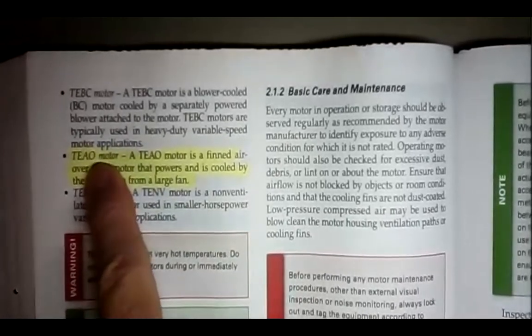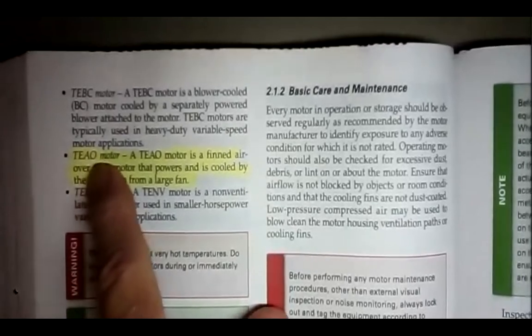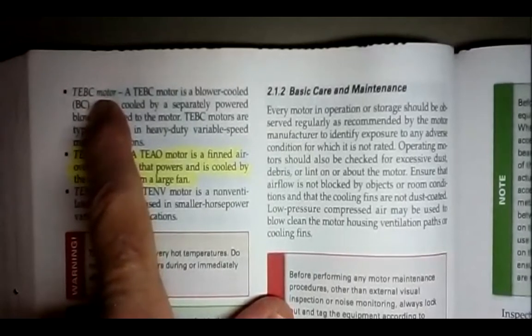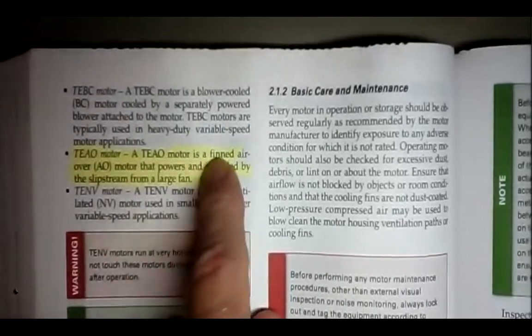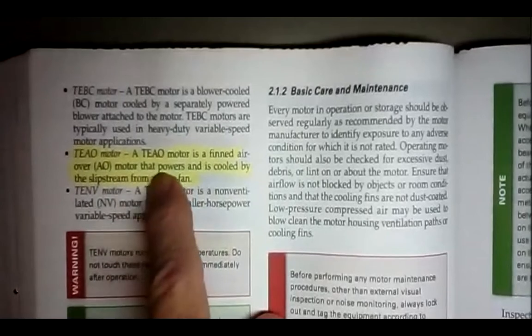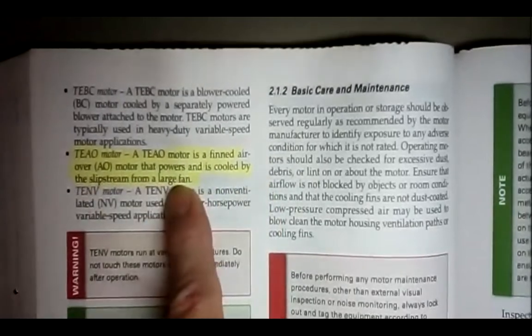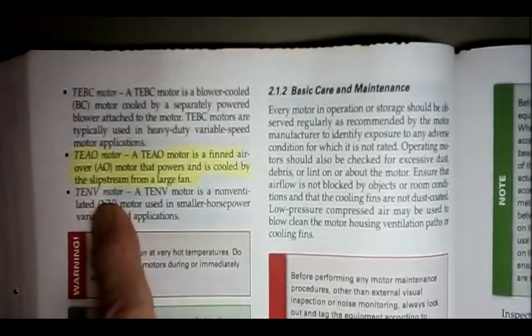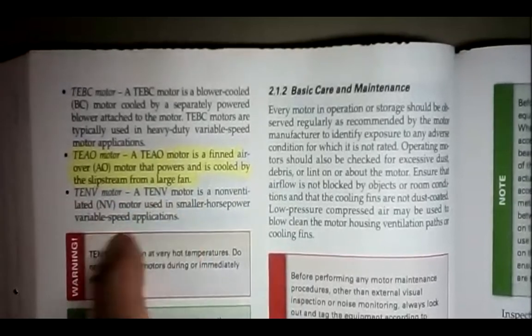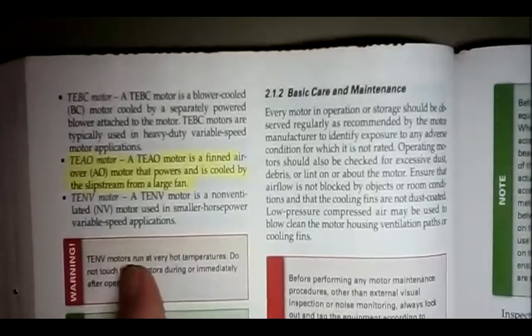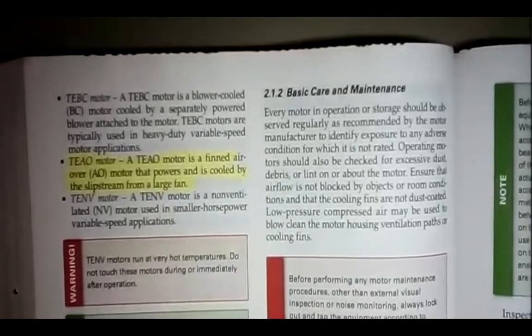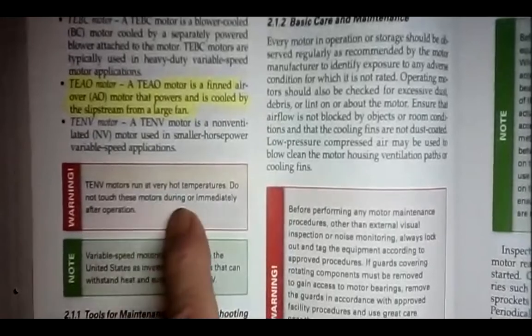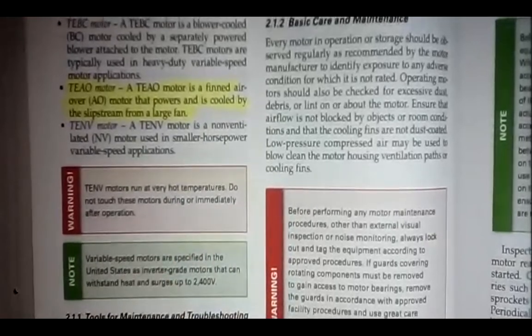These are different types of motors. The AO is air over. They're cooled by air over. This is blower cooled. TEBC motor is a blower cooled motor. A TEAO motor is fin. It's a wind air over motor that powers and is cooled by the slipstream of a large fan. So on the rotating shaft of the motor, they actually put a fan with fins that blows air over the motor and cools the motor as it operates. And this is a non-ventilated motor. TENB, non-ventilated. TENB, non-ventilated motors run at very hot temperatures. Do not touch these motors during or immediately after operation. They're hot enough they can burn you.